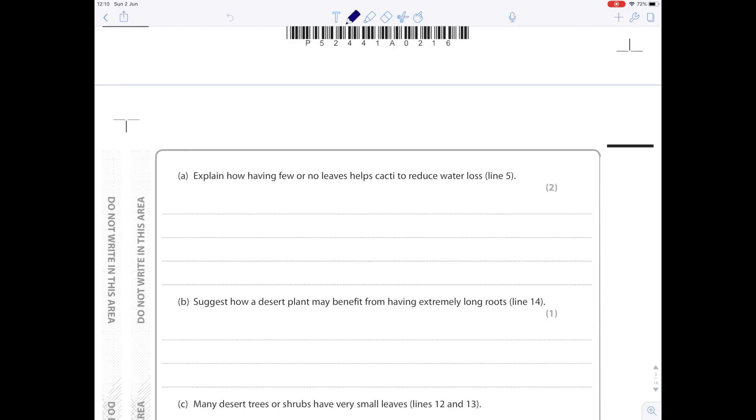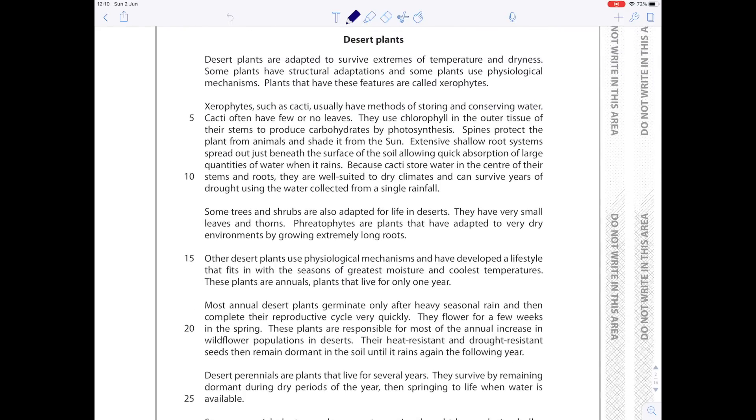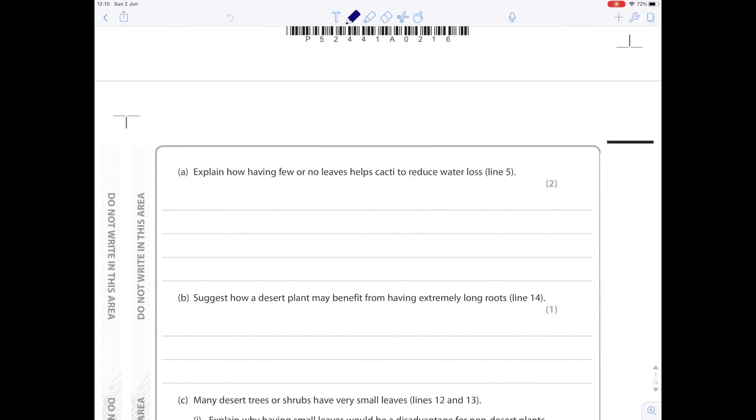Now we're going to start with question 1. Explain how having few or no leaves helps the cacti to reduce water loss, line 5. The passage says cacti often have few or no leaves, but doesn't actually tell you anything. So let's zoom in. If they have no leaves, then remember the leaf structure which has the waxy cuticle, upper epidermis, palisade mesophyll, spongy mesophyll, lower epidermis, and guard cells with stomata. That's the key bit here because water loss or transpiration occurs out of the stomata. If you have fewer stomata, then you'll have automatically less water loss. So we're going to say no leaves means fewer stomata, so less transpiration takes place.